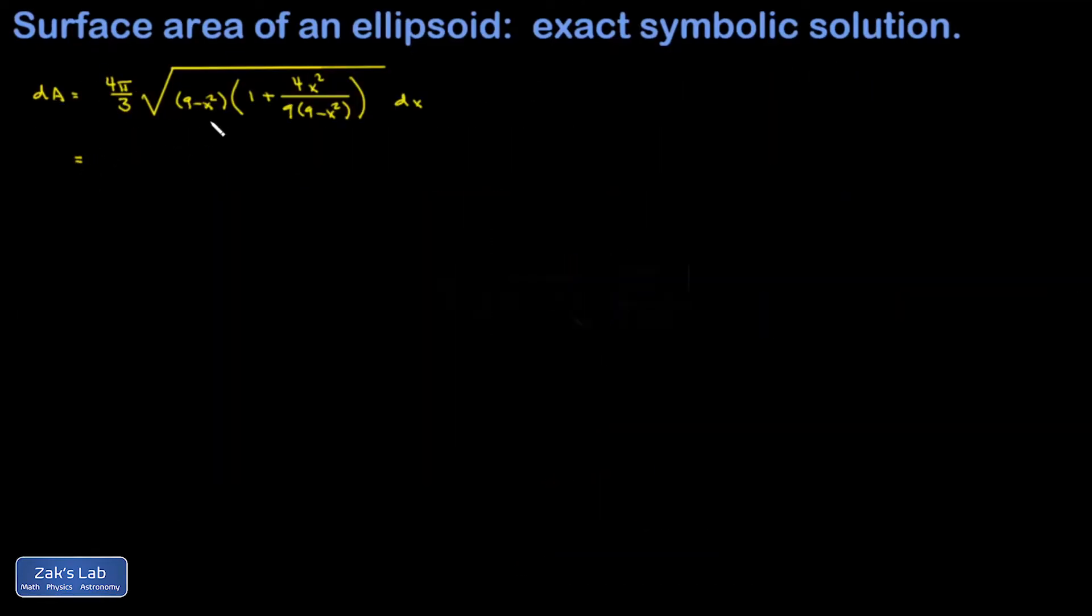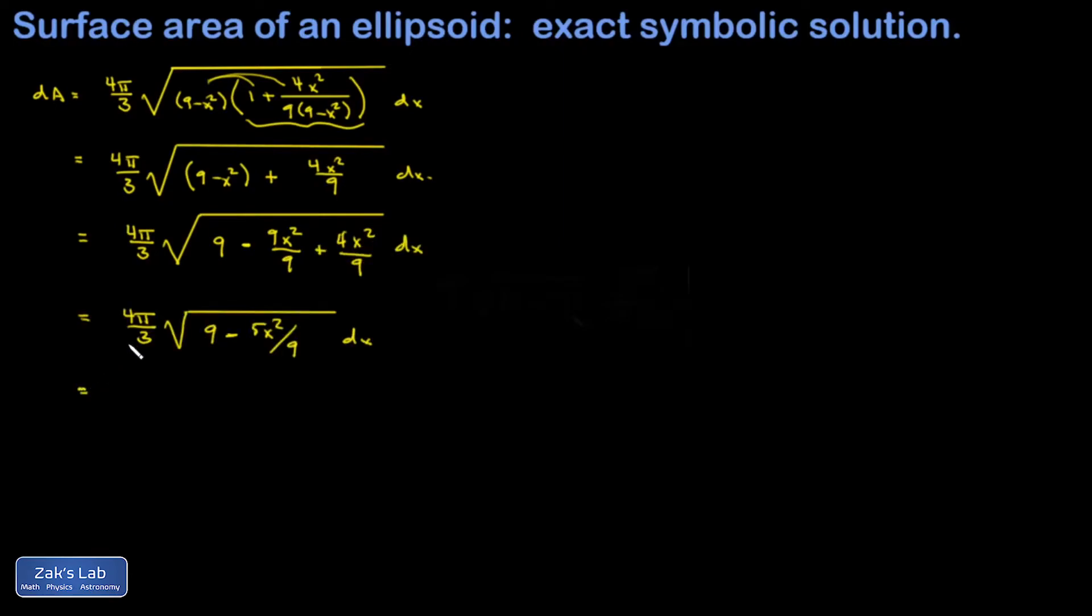When I distribute the 9 minus x squared into this second piece inside the radical, it's going to cancel a factor in that second term. When I distribute it to that fraction, it just cancels the 9 minus x squared, and I'm left with 4x squared over 9. x squared is just 9x squared over 9, so I'm getting a common denominator. I don't particularly like the fraction inside the square root, so I'm going to multiply by 3 inside the square root and divide by 3 out in front. I end up with 4 pi over 9, and inside I have 81 minus 5x squared.